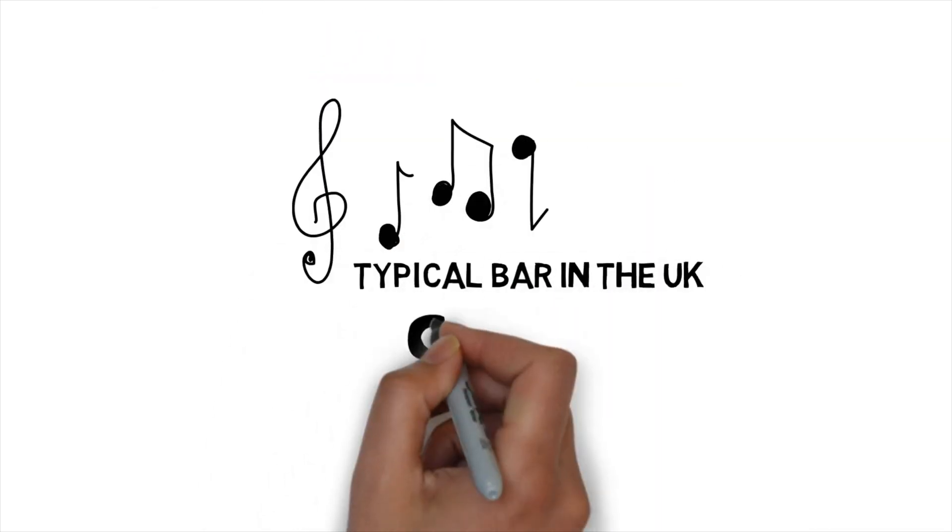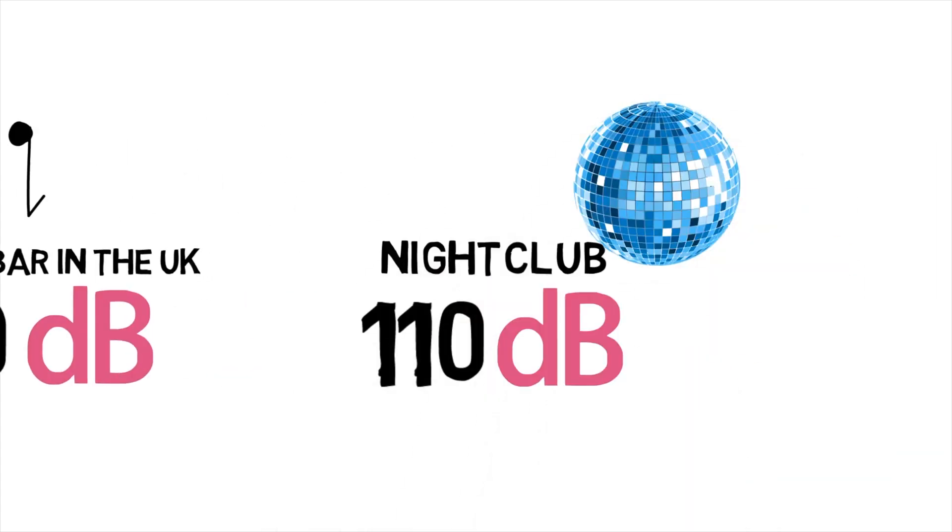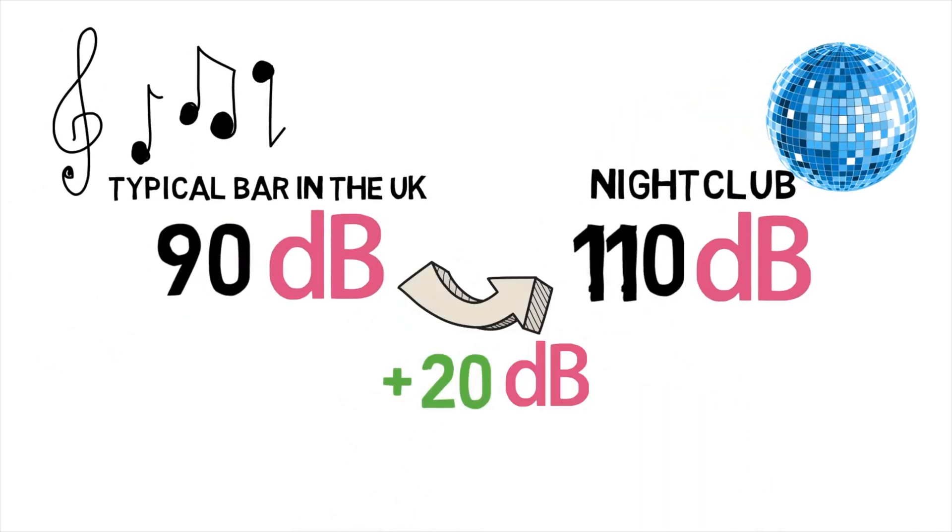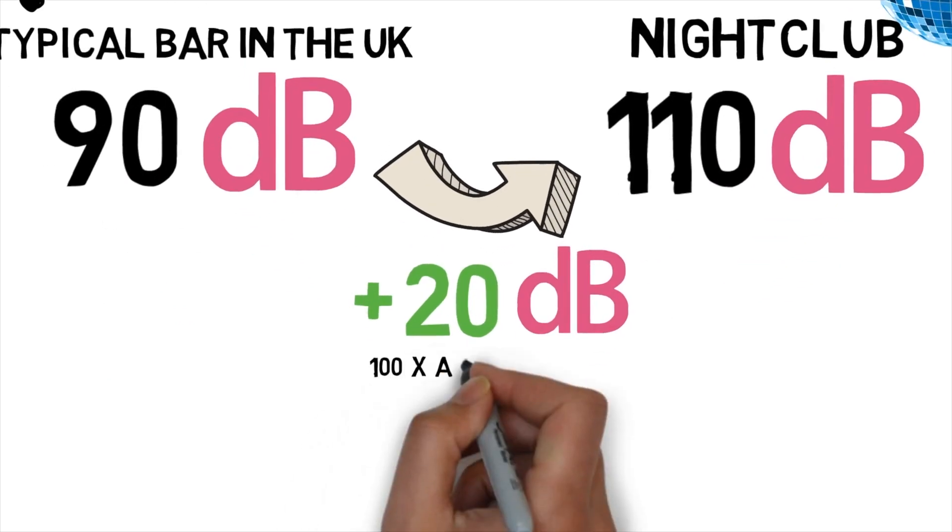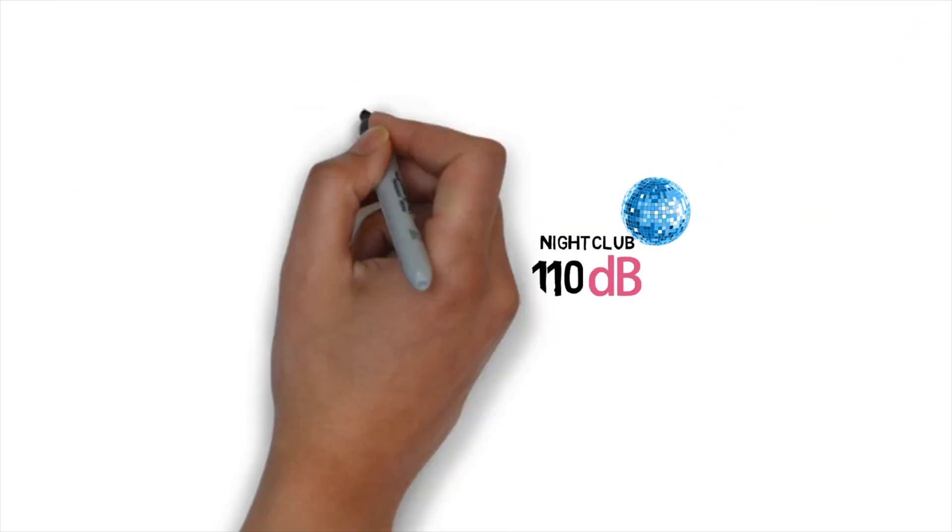Now, a typical bar in the UK might be 90 dB, but the club next door might be playing at 110. That represents a 20 dB difference, which might not sound that much. However, because logarithm, it's 100 times the acoustic power and 4 times the perceived loudness. So, the nightclub would be 4 times as loud as the bar, and that is decibels.